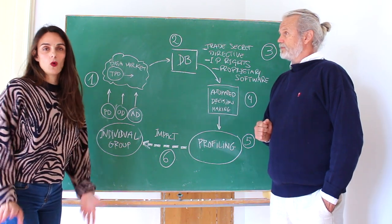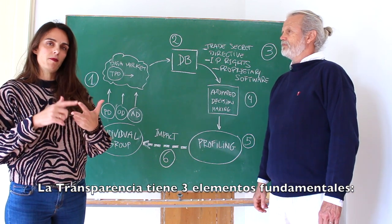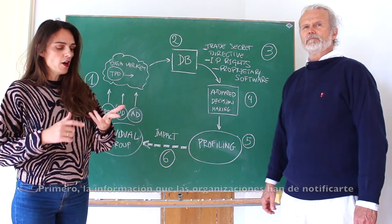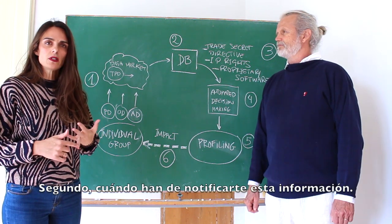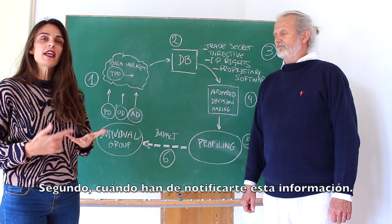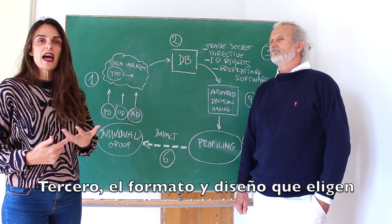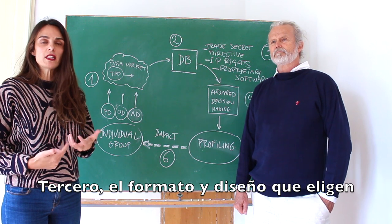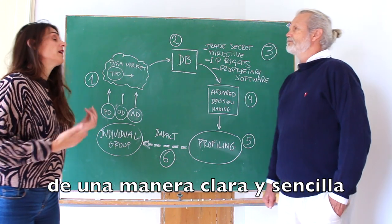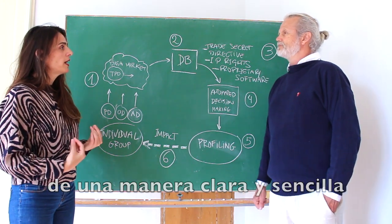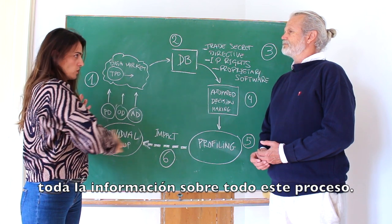Okay so we can say that transparency is made of three big components. First of all the information that companies have to tell you. Second it is the timing, when they have to tell you this information. And the third component is the design or the format — which format do they choose to tell you this information so you understand in a very clear and plain way all the information about all this equation.